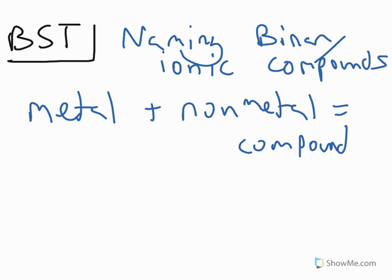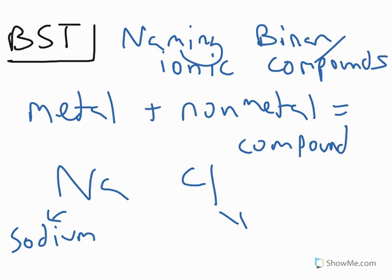So, for example, if you take sodium, which is Na, and chlorine, which is Cl, they would react to form a compound. So you have sodium, which is the metal, and chlorine, which is the non-metal.